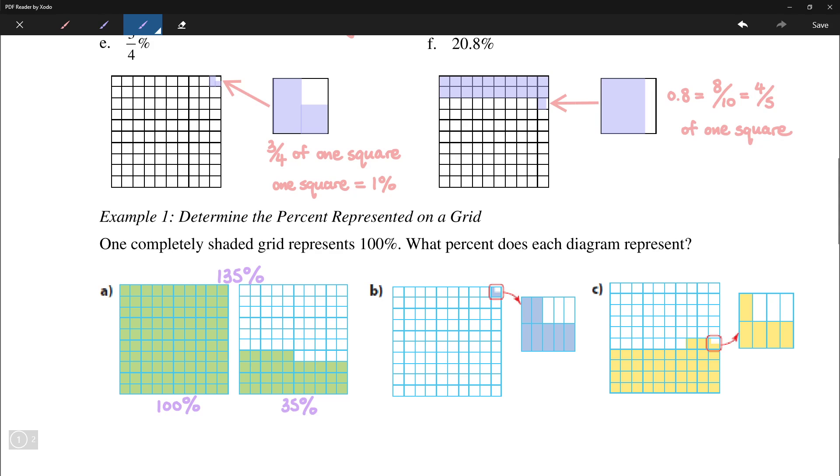Here, only part of one square is shaded in. And that square was divided into 10 equal parts, 7 of which is shaded in. So this would be, can be written as 7 tenth of a percent, which is also 0.7%.